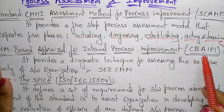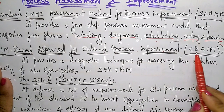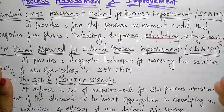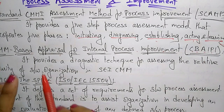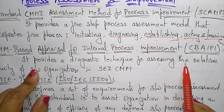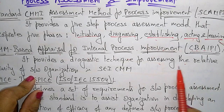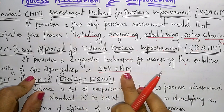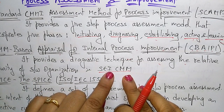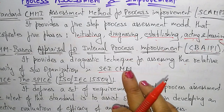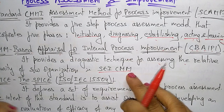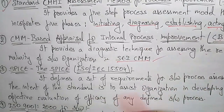The next standard is CBA IPI — CMM Based Appraisal for Internal Process Improvement. This standard provides a diagnostic technique for assessing the relative maturity of a software organization. The SEI — Software Engineering Institute — developed the Capability Maturity Model. If a software organization is satisfying some internal process improvement criteria, then they are given this standard.